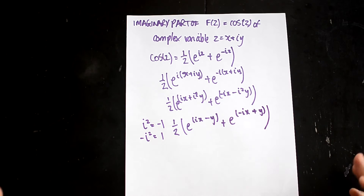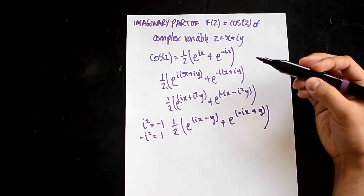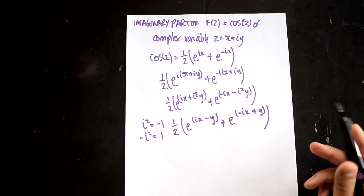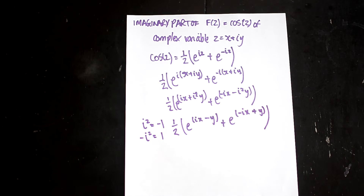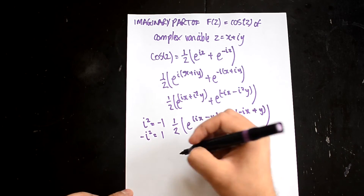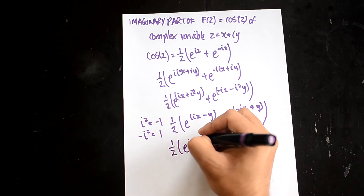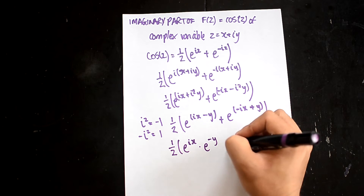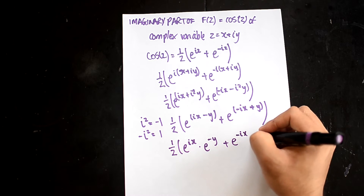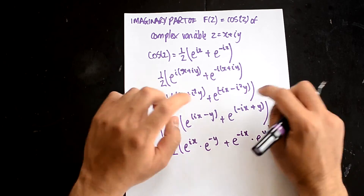Now we're going to do some index laws — you may have done this at school. This can be rewritten as one half of e^(ix) multiplied by e^(-y), plus e^(-ix) multiplied by e^(y). So we can break these exponents up using index laws.